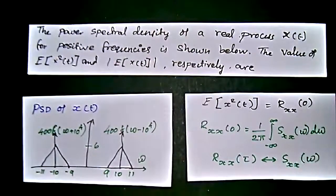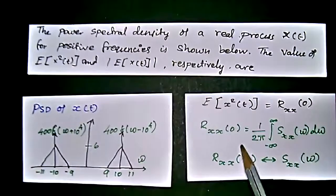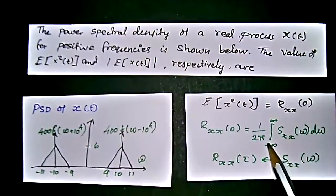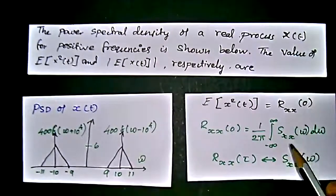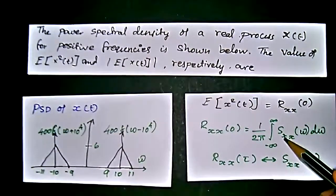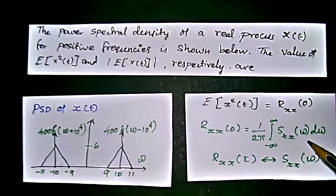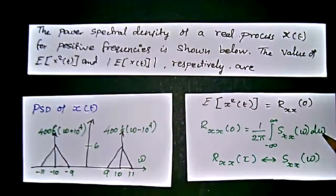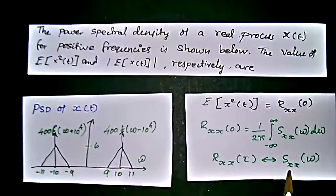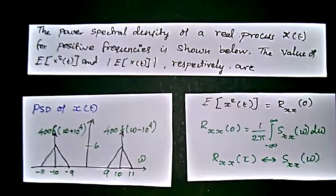When we have the expectation, that is variation, that is R_X(0) equal to 1 by 2π integration from minus infinity to plus infinity of S_X(ω) dω. This uses the Fourier transform relationship between R_X and S_X.